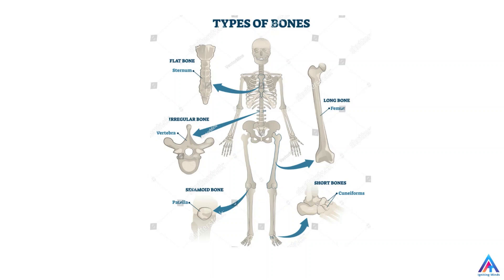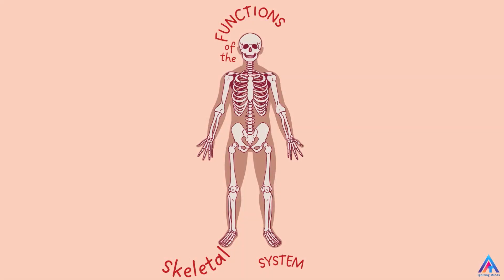Long bone is the longest bone in our body called the femur. It is found on the thigh. And the cuneiforms — these are short bones which are basically found on the foot. So these are basically the types of bones found in our body.